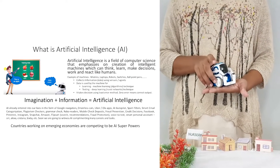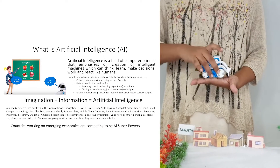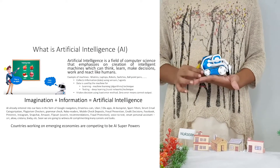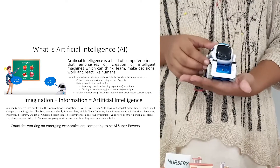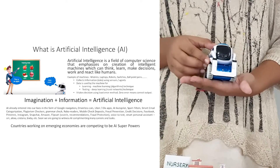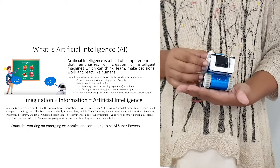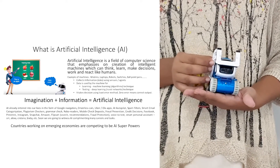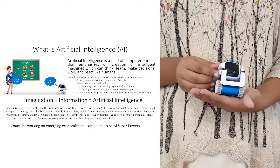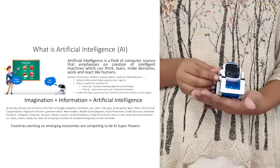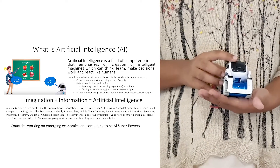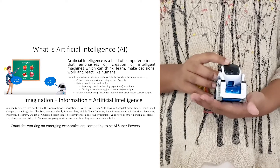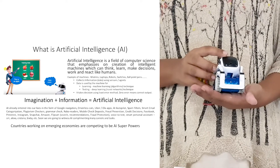Artificial Intelligence is a field of computer science that emphasizes the creation of intelligent machines which can think, learn, make decisions, work, and react like humans. Machines collect information using sensors and agents. Collected information is used by the machine for learning and testing using machine learning and deep learning. The machine takes decisions using the least error method. What one requires in AI is imagination and information.